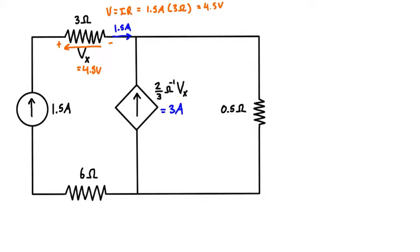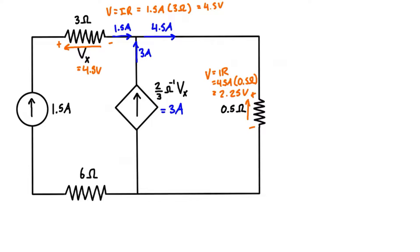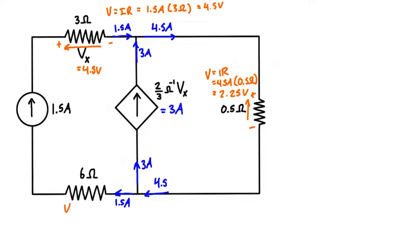We know this branch carries 1.5 amps because of the independent current source. We know the dependent source provides 3 amps, so a total of 4.5 amps are coming into this node, meaning 4.5 amps must be going out as well. For the bottom resistor, V = IR with 4.5 amps and 0.5 ohms gives a voltage drop of 2.25 volts. Because the current enters through the top, the positive terminal is on top and the negative on the bottom.